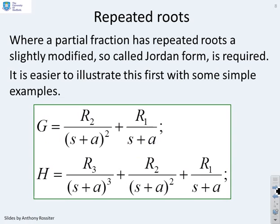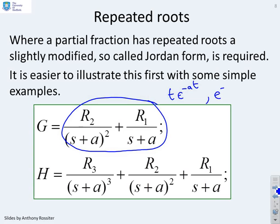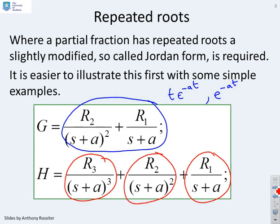So here you can see I've got a G of s which has got a repeated root. So when I do the partial fraction expansion, I've got an R2 over s plus a squared, and an R1 over s plus a. For those who are familiar, this corresponds to a mode t e to the minus at, and e to the minus at. What about H? You can see I've got a cubic form of the pole, a quadratic form, and a single form. So this root is repeated three times.